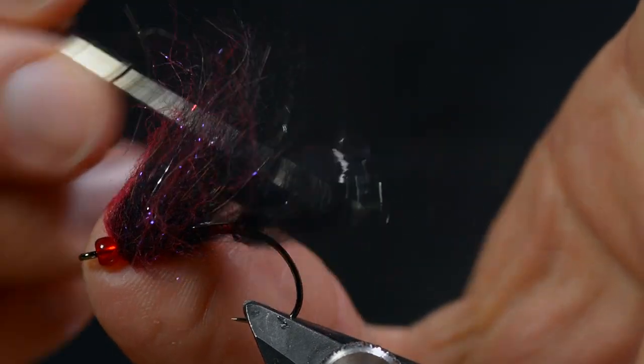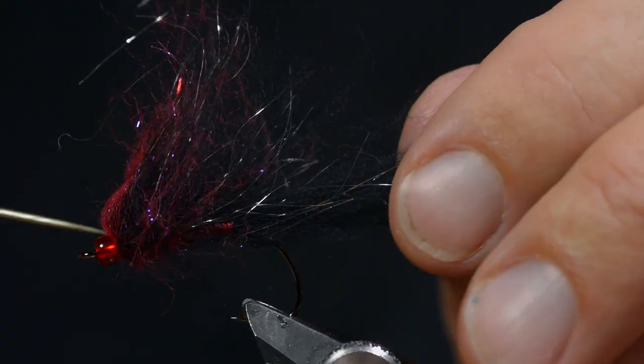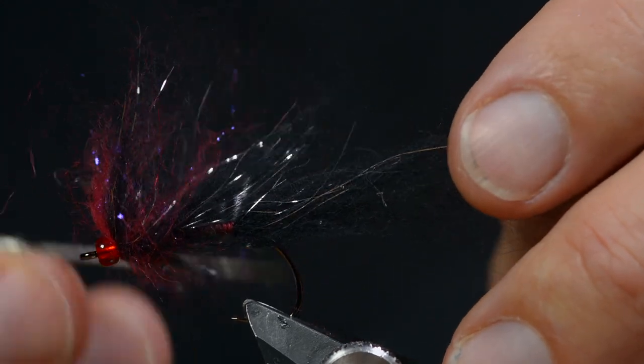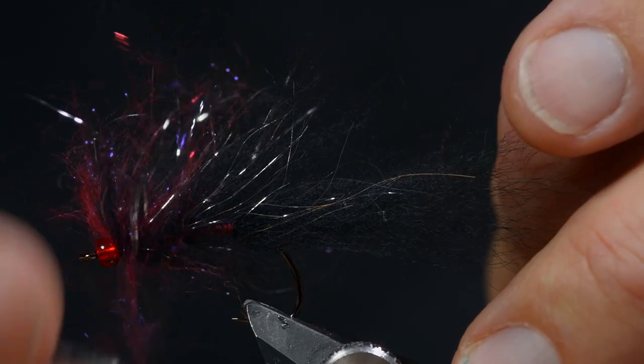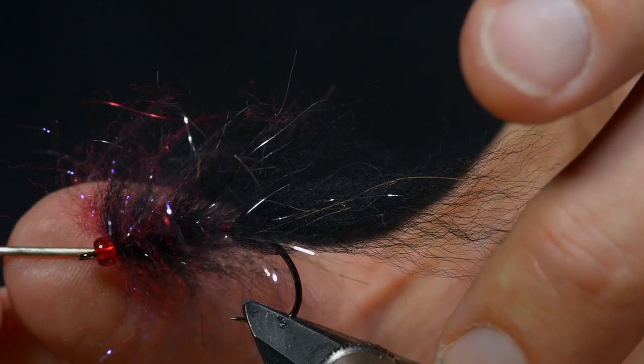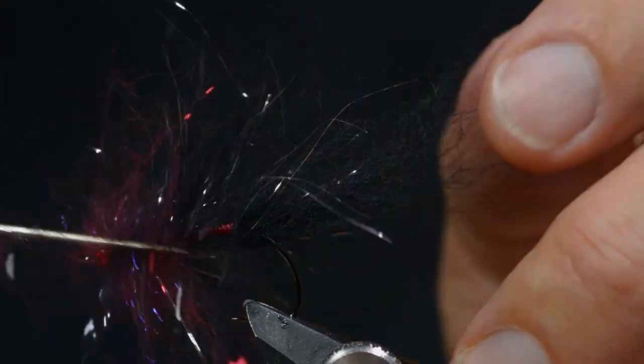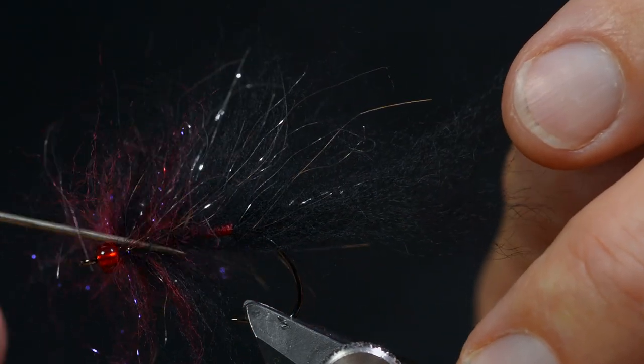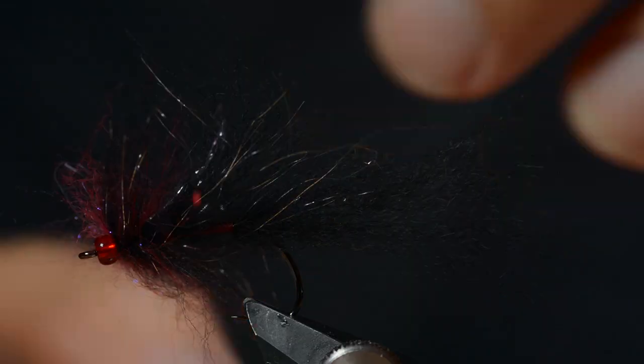I tease out the fibers to get any loose fibers of wool I pull out of the fly. Pulling them off, brushing up with a toothbrush.